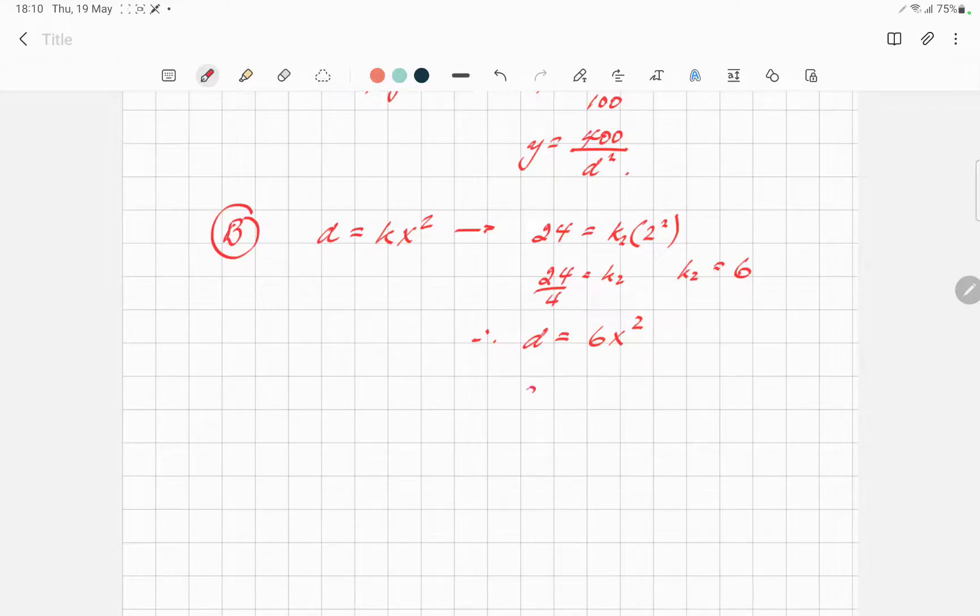So, now what we want to do is to write this. Remember, the first one was d squared. So, let's get an expression for d squared. d squared equals 6x squared, all squared. That is basically 36x to the power of 4.